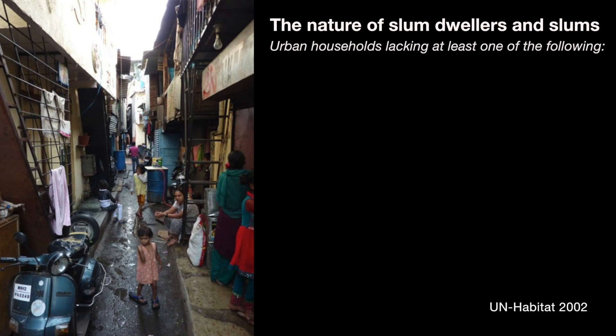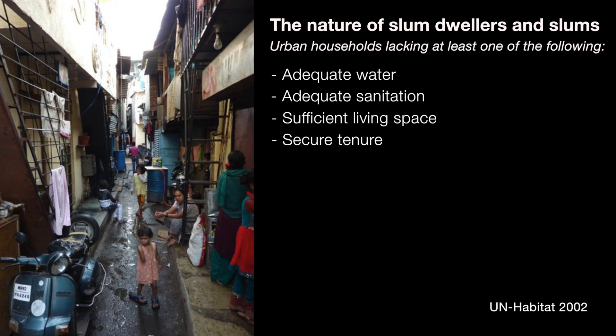The nature of slums and slum dwellers was discussed by an expert group meeting organised by UN Habitat in 2002, and it came up with five main indicators which can be used to define who a slum dweller is: adequate water, adequate sanitation, sufficient living space, secure tenure, and durable housing.